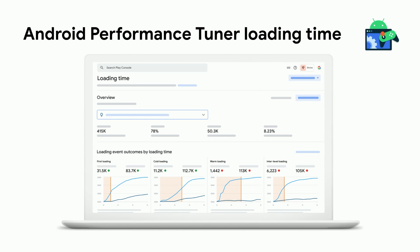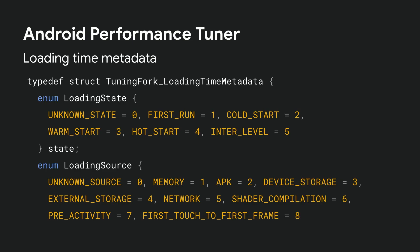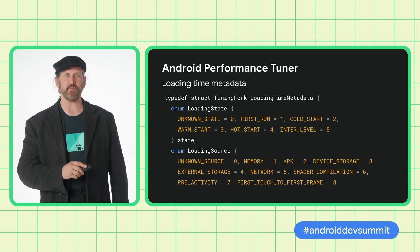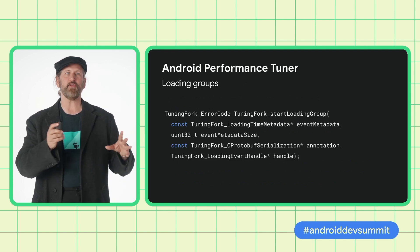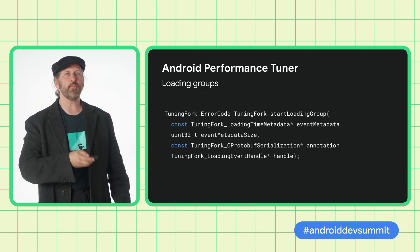Short loading times are also critical in keeping users engaged with your content, and APT now helps you understand how loading times impact your ecosystem. Start Recording Loading Time creates a loading time event associated with the given metadata and annotation, and fills in a handle to be used with the Stop Recording Loading Time function. While Stop Recording Loading Time ends a previously started loading time event, the event will be uploaded at the next session flush. Loading time events contain metadata to help correctly characterize your loading issues, such as whether it's the first time your app is run, a typical cold start, the app coming up from being backgrounded, or whether a new level is being loaded. It covers the loading source and network type if it's a network load. You can create loading groups to represent larger tasks that involve many individual trackable elements, such as downloading assets off a CDN and then extracting the content.